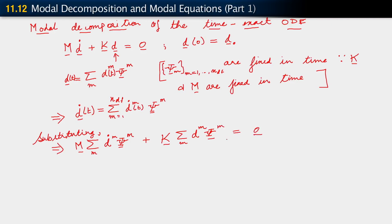What I'm going to do next is apply linearity. Because M and K are matrices and we're dealing with linear algebra, we can write this as sum over m of d_dot_m M psi_m plus sum over m of d_m K psi_m equals zero.